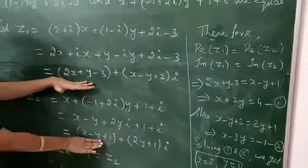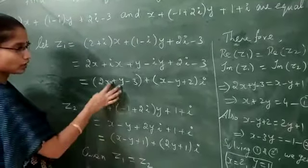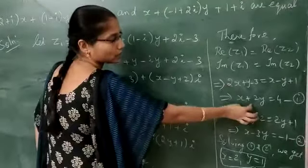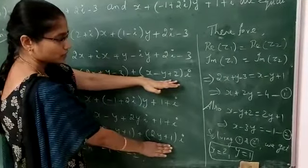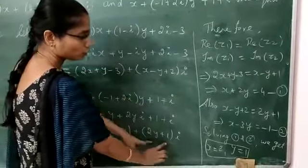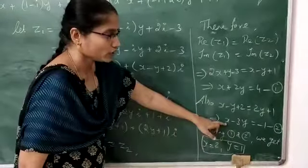we can equate the two real parts. We will get this equation. Likewise, if we equate the imaginary parts, that is x minus y plus 2 equals 2y plus 1, we will get one equation.